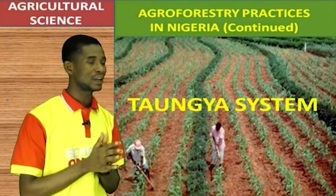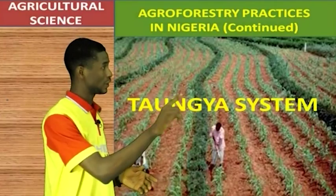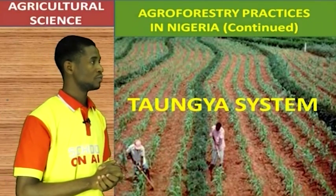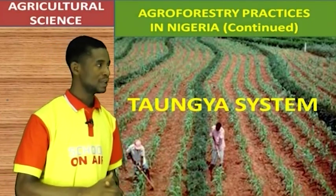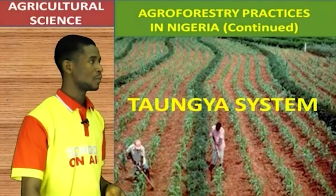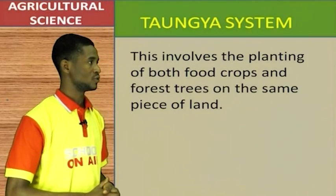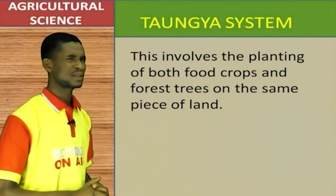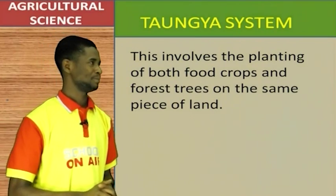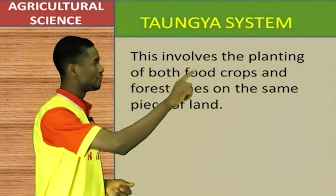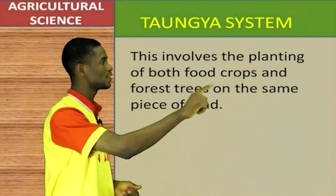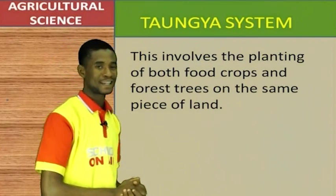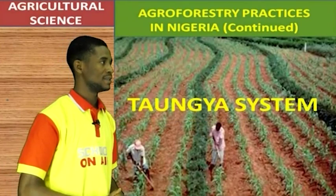It's called the Taungya system. It is also an agroforestry practice in Nigeria. Come along with me as we talk about this very wonderful and interesting agroforestry practice. The Taungya system involves the planting of both food crops and forest trees on the same piece of land.